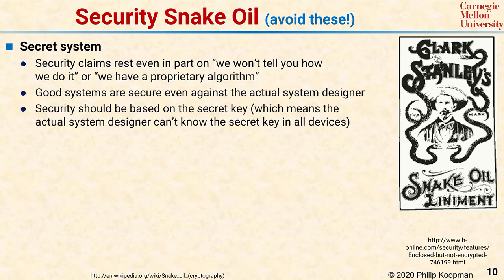A good system is secure even if the actual system designer with complete knowledge of how the system works cannot break in, unless that system designer has access to the secret key being used on the particular system they want to break into. To be clear, sometimes there are secure systems where they don't publish all the details to the entire public, but typically those also involve one or more trusted third parties that come in and audit the design. The reality is, the best security is one where you can openly publish the design and it doesn't do the bad guys any good.